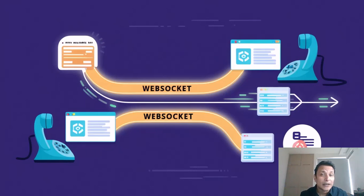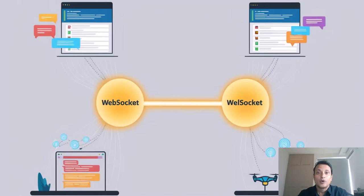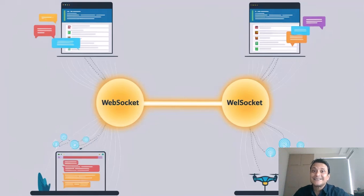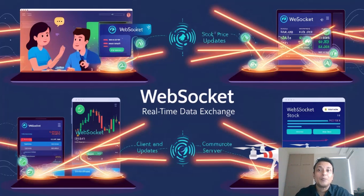Think of a WebSocket as a direct hotline. When you start a WebSocket connection, it begins with a simple handshake through HTTP, but then upgrades the connection to a persistent, bidirectional channel. This means that after the initial handshake, WebSocket does not have to repeatedly ask for permission to send or receive data. Instead, it keeps the line constantly open, allowing instantaneous exchange of information in both directions — whether you are chatting live, tracking stock prices, or controlling a drone.